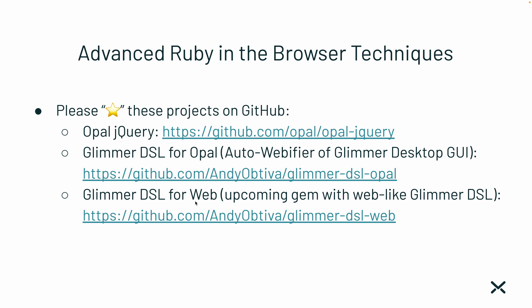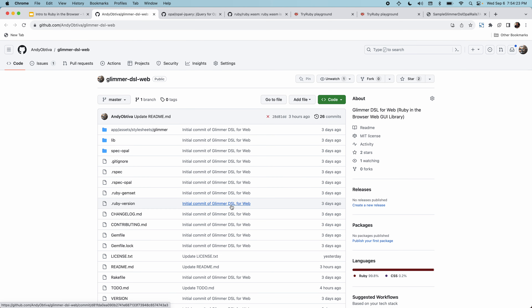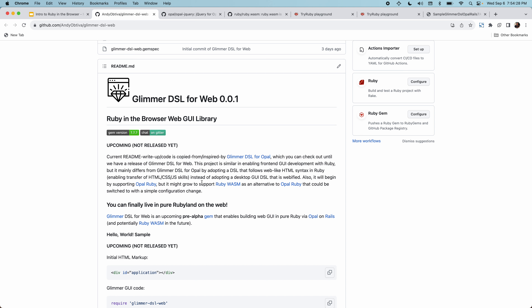Last but not least, Glimmer DSL for Web is an upcoming gem with a web-like Glimmer DSL. Glimmer DSL for Opal was an experiment to run desktop apps in a browser using the same syntax. However, what if I want to appeal to front end developers who already know HTML, CSS, and JavaScript very well, but want to take advantage of Ruby's niceties like blocks, operator overloading, and nice Ruby APIs? There's a new upcoming project I just started — Glimmer DSL for Web — that gives us a similar thing to Glimmer DSL for Opal, except it starts supporting Opal first and eventually I want to support Ruby Wasm as an option.